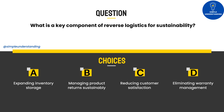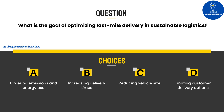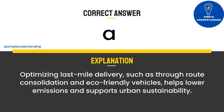Sustainable reverse logistics involves handling returns, recycling, and refurbishment in ways that reduce waste and support the circular economy. Question 7: What is the goal of optimizing last-mile delivery in sustainable logistics? A. Lowering emissions and energy use. B. Increasing delivery times. C. Reducing vehicle size. D. Limiting customer delivery options. Answer: A. Optimizing last-mile delivery through route consolidation and eco-friendly vehicles helps lower emissions and supports urban sustainability. Question 8: Which approach reduces water consumption in logistics operations? A. Using single-use packaging. B. Implementing water recycling systems. C. Ignoring landscaping needs. D. Increasing irrigation. Answer: B.